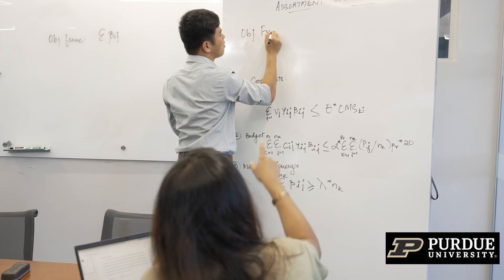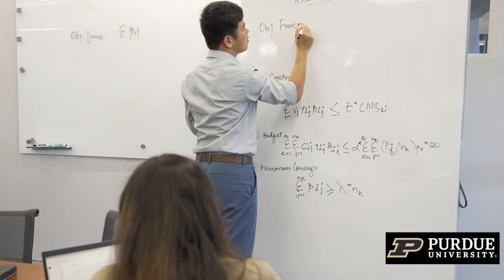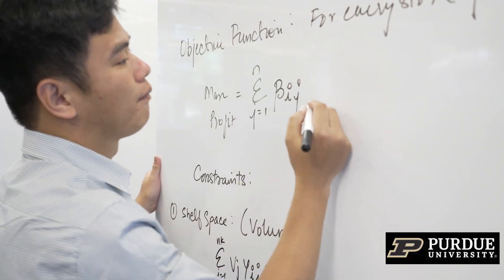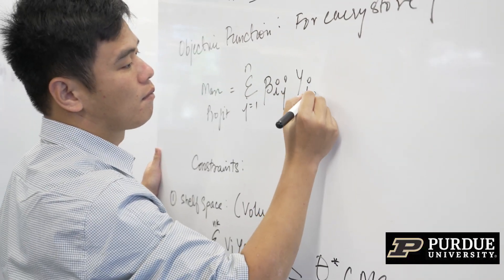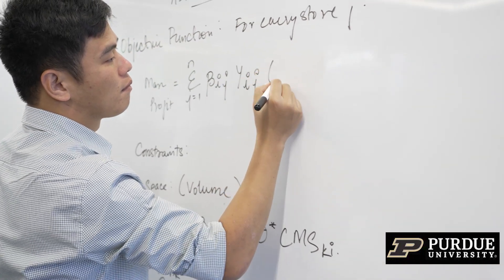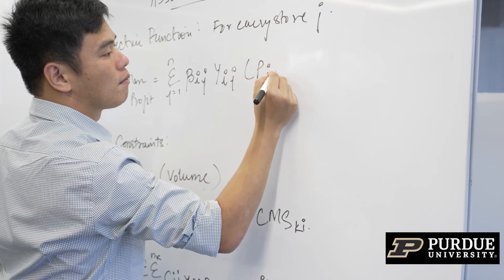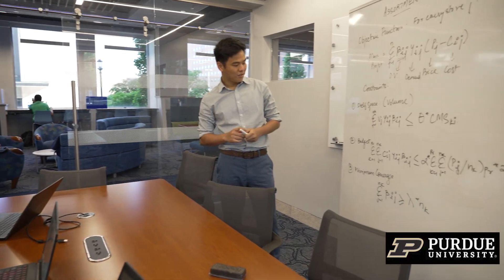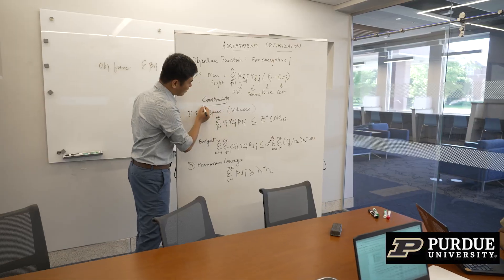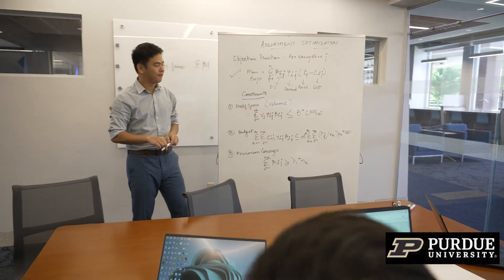We first set up the mathematical problem statement, or the objective function. Since we have approximately 5,000 stores across the United States and each store has around 10,000 SKUs to choose from, we go with the objective function of maximizing profits, given by Beta IJ — our decision variable — multiplied by the predicted demand YIJ, multiplied by the difference between the price of each SKU minus the cost of acquisition for each SKU.